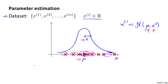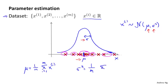Here are the standard formulas for estimating mu and sigma squared. We estimate mu as simply the average of the m examples — giving us the center of the distribution. We estimate sigma squared as the average of the squared differences between each example xi and the mean mu: (1/m) times the sum from i=1 to m of (xi minus mu) squared. So the variance is estimated as the average squared deviation from the mean.